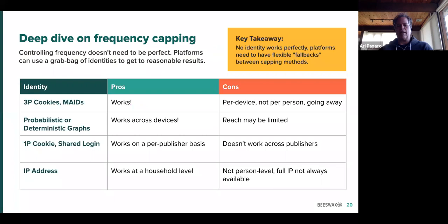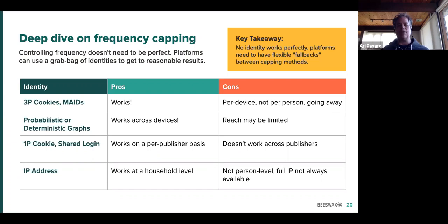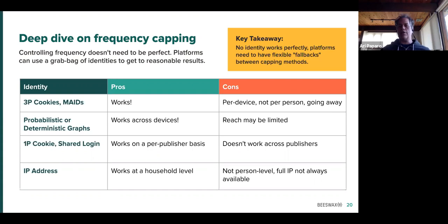Let's first talk about frequency capping. Controlling frequency does not need to be perfect, and it isn't perfect. Even if we had perfect identity on every impression, frequency capping would still not be perfect because just the mechanics of reading and writing frequency so quickly make it a best-effort type of technology. No DSP can frequency cap perfectly. With that said, what you're trying to do is bend the curve. You're trying to avoid the spikes of frequency — you don't want to serve thousands of ads to one person. You want the average curve to be optimal so that your ads resonate the most with the largest reach.